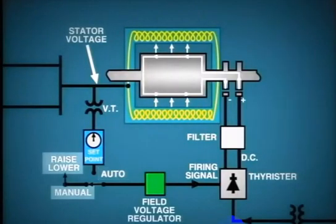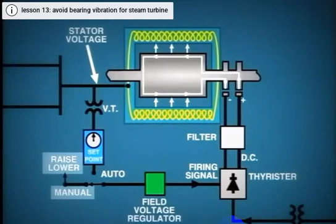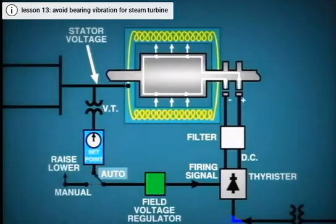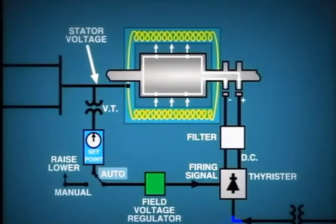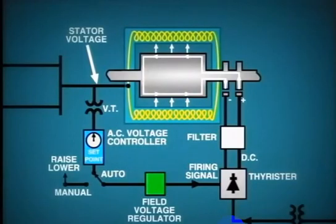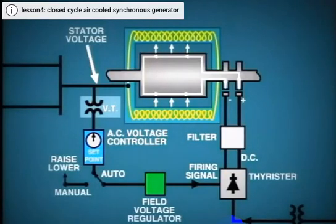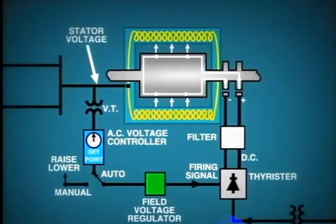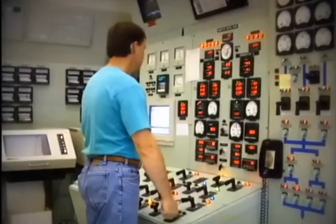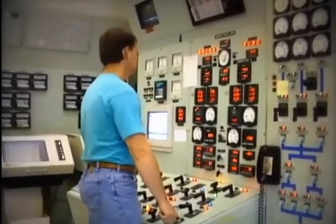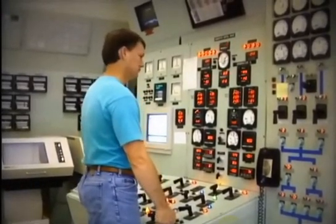The manual control disconnects the automatic function and allows the operator to directly control excitation. However, when the generator is in operation, the field voltage regulator is usually controlled from the auto position — that is, from the AC voltage controller. This controller monitors the generator bus output voltage through VTs and automatically adjusts excitation to maintain the setpoint voltage. The operator can adjust this setpoint and thus exercise control while the excitation system is operating in auto.